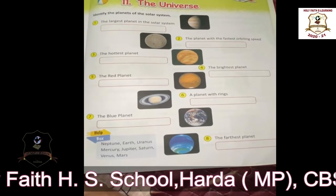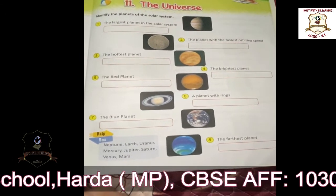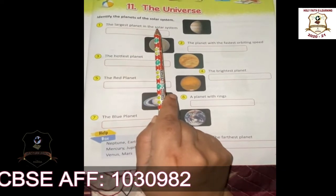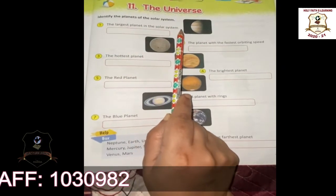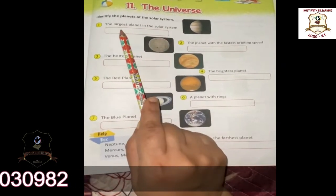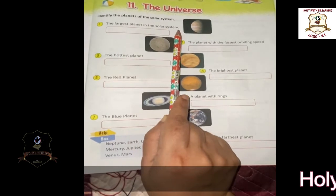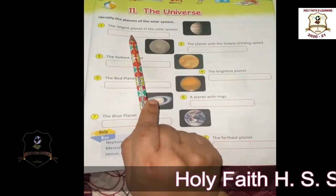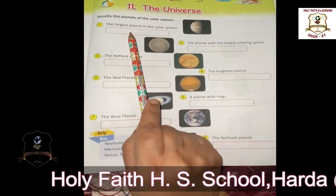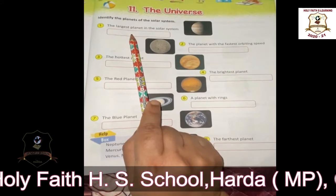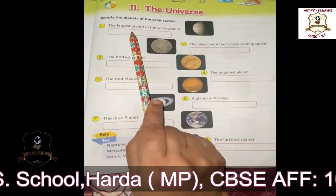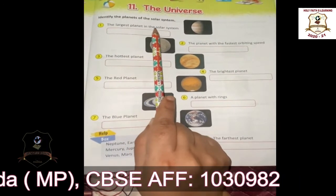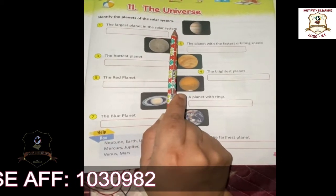Let us answer the questions one by one. The first one: which is the largest planet in the solar system? We all know the answer is Jupiter. Jupiter is the largest planet in the solar system.